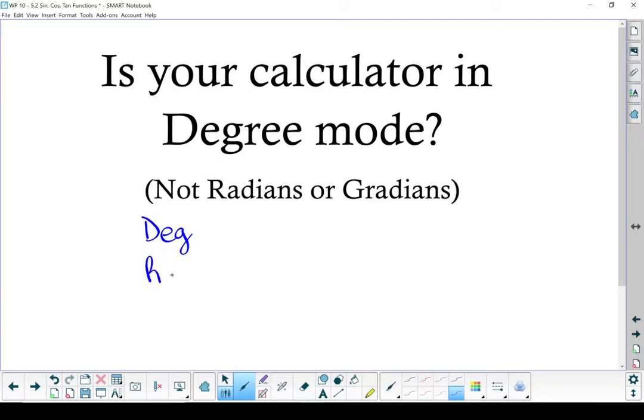The other options are radians, R-A-D, or gradians, G-R-A, or it might be a D, an R, or a G. Make sure it's in degree mode, not in radian mode, not in gradient mode.